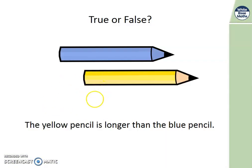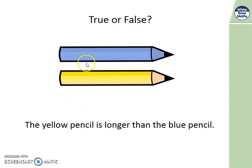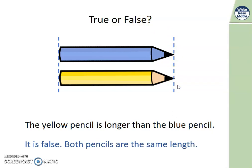True or false? The yellow pencil is longer than the blue pencil. What do you think? Well, we need to line them up like we normally do. We line them up to compare. Is it true or is it false? It's false because, as you can see, they start at the same place and they end at the same place. So they are both the same length.